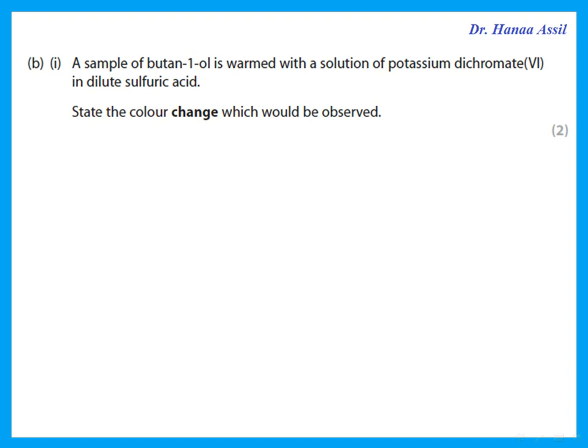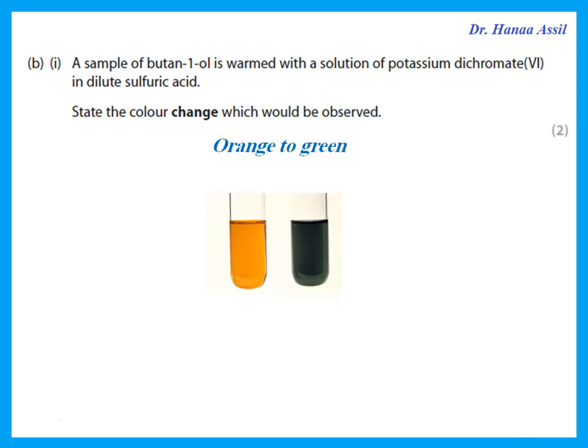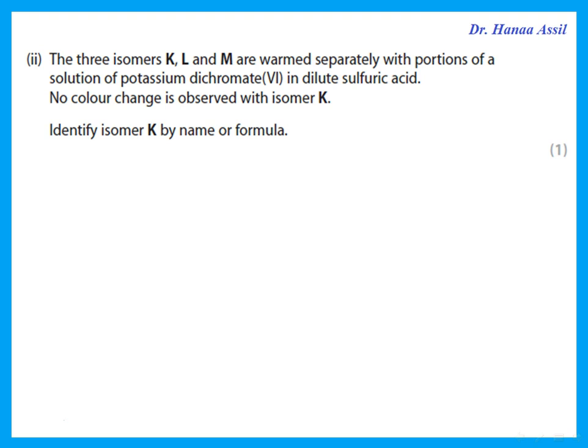A sample of butane-1-ol is warmed with a solution of potassium dichromate, which is an oxidizing agent used to oxidize alcohols. If I react potassium dichromate with butane-1-ol, what is the color change? Potassium dichromate is originally orange; when it acts as an oxidizing agent and oxidizes the alcohol, it turns from orange to green — it becomes reduced.